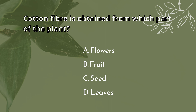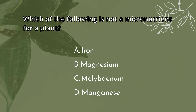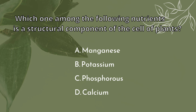Cotton fiber is obtained from which part of the plant? Fruit. Which of the following is not a micronutrient for a plant? Magnesium. Which one among the following nutrients is a structural component of the cell of plants? Calcium.